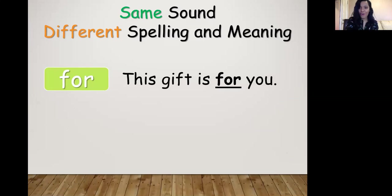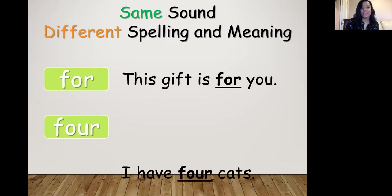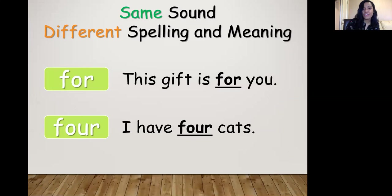For example, this gift is for you, but then I can also say I have four cats. So again, we have two different words with different spelling and meaning, but they sound the same. How do we know the difference when to use them? It depends on what we're talking about. So you have to make sure when you're reading, when you're writing, and when you're spelling, or even when you're speaking, you use the correct word.